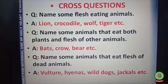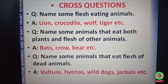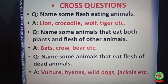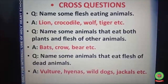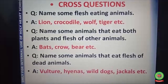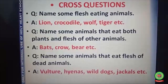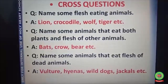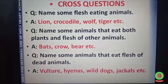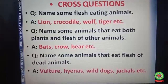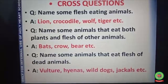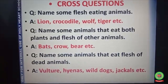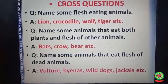Question number 5: Name some animals that eat both plants and flesh of other animals. Answer: Bats, crow, bear, etc. are some animals that eat both plants and flesh of other animals.